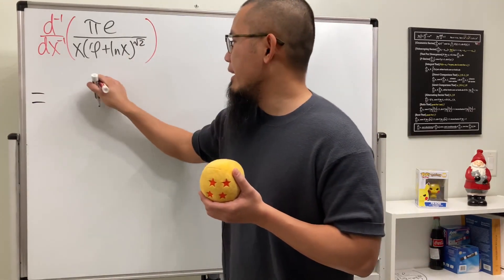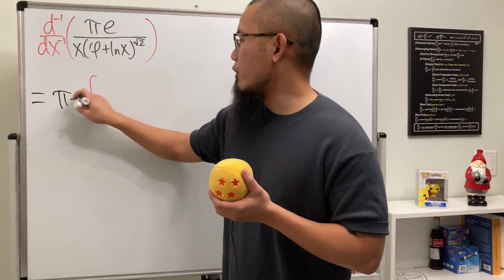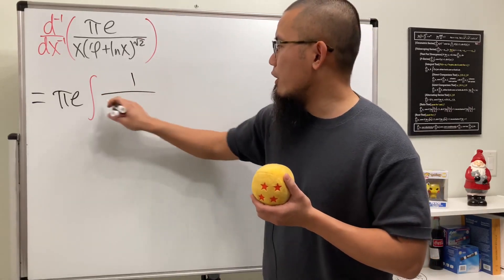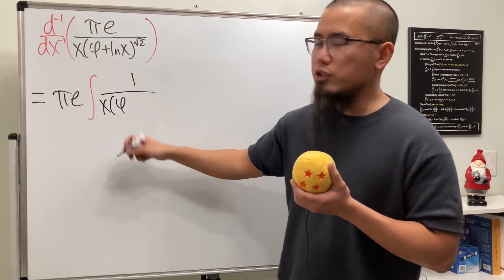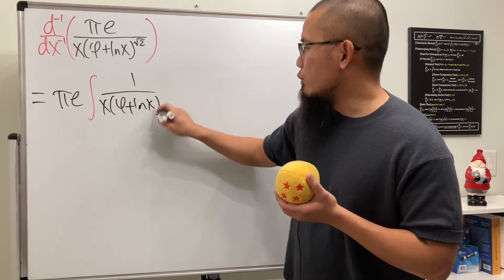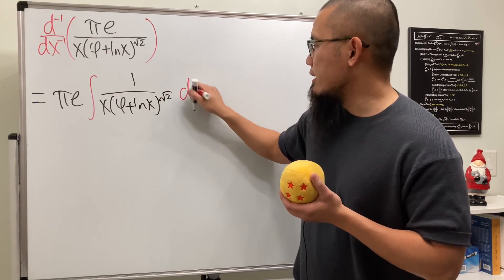So this right here is just going to be the integral of that, which we can put a pi in the front like this. And then we just have 1 over x times phi, which is the golden ratio, and then plus ln x and then raised to the square root of 2 power, and then don't forget the dx right here.